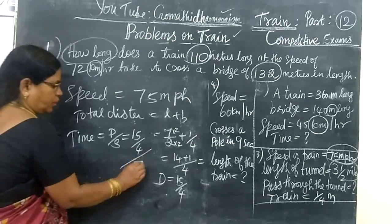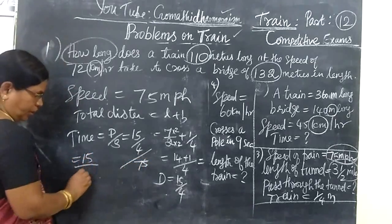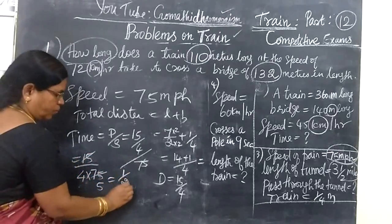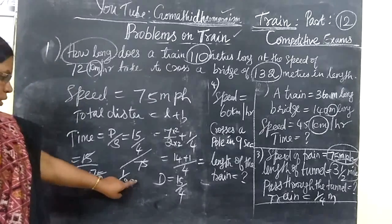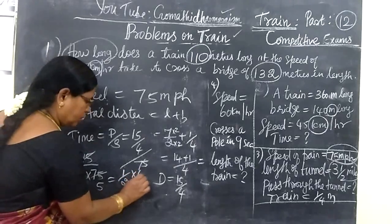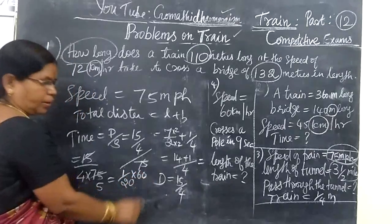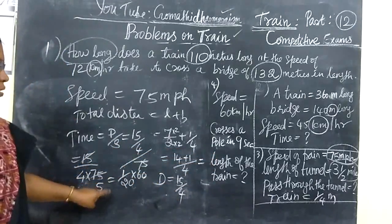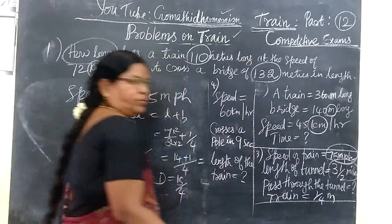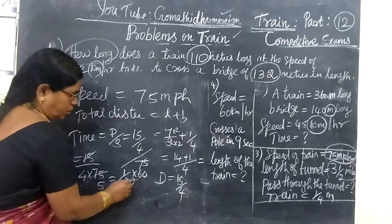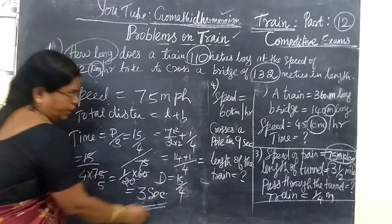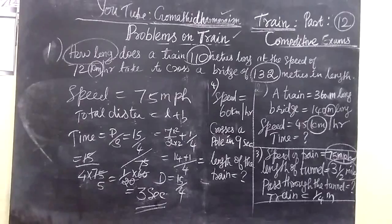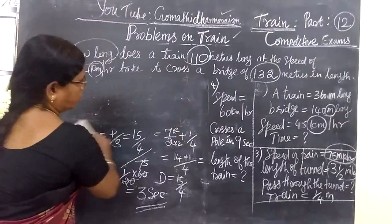So here you write 75. So 15 by 4 into 75. This equals 1 by 20. 1 by 20 you are changing into minutes. Multiply by 60. So 3 minutes. And the time is 3 minutes.